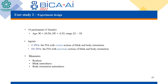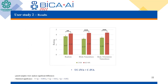In User Study 2, we evaluated the effect of uncertain actions on the agent's believability. We recruited 18 participants, with the same interaction scenario as User Study 1. The two agents compared were C-IVA (IVA with certain actions of blink and body orientation) and UC-IVA (IVA with uncertain actions of blink and body orientation). Participants evaluated three variables: realism, blink naturalness, and body orientation naturalness. A paired sample t-test was used to evaluate the two agents. Results show that UC-IVA received higher ratings than C-IVA for realism and naturalness.